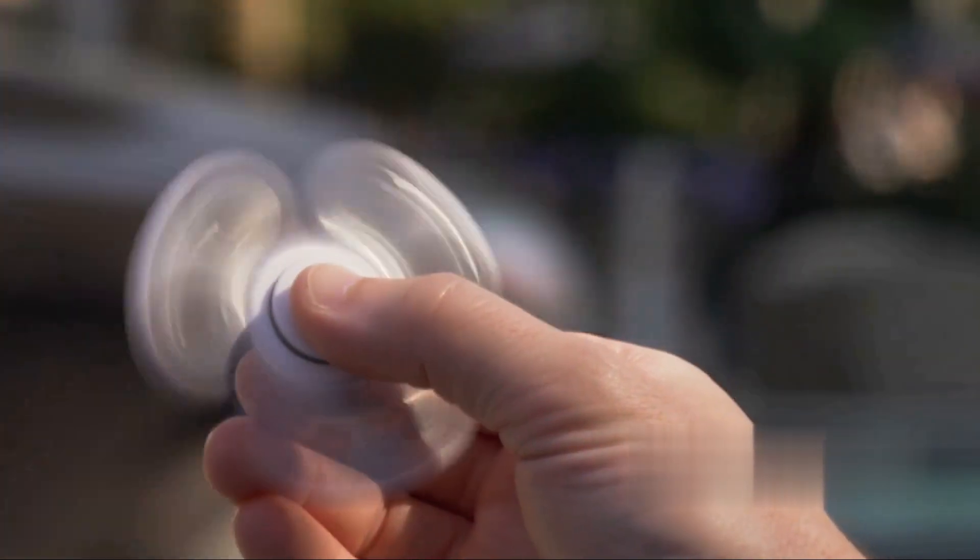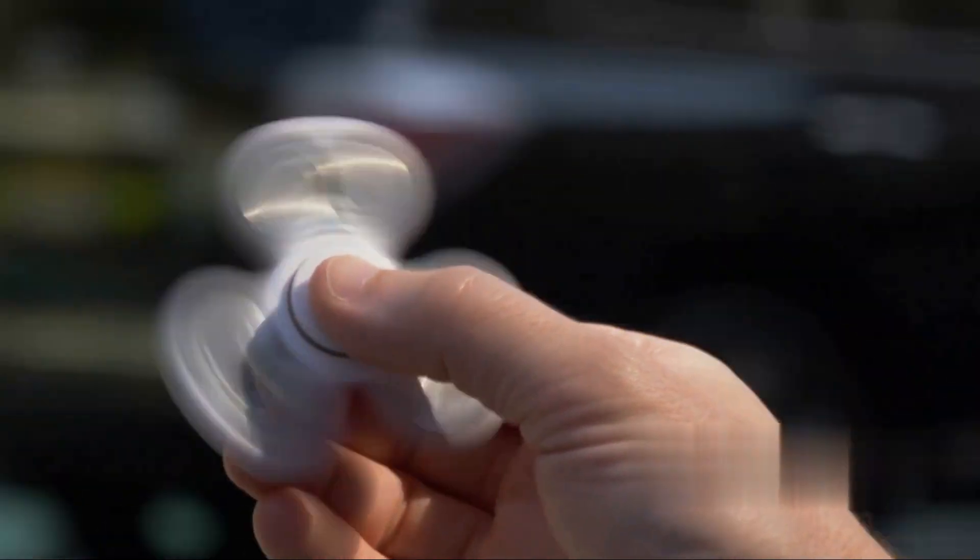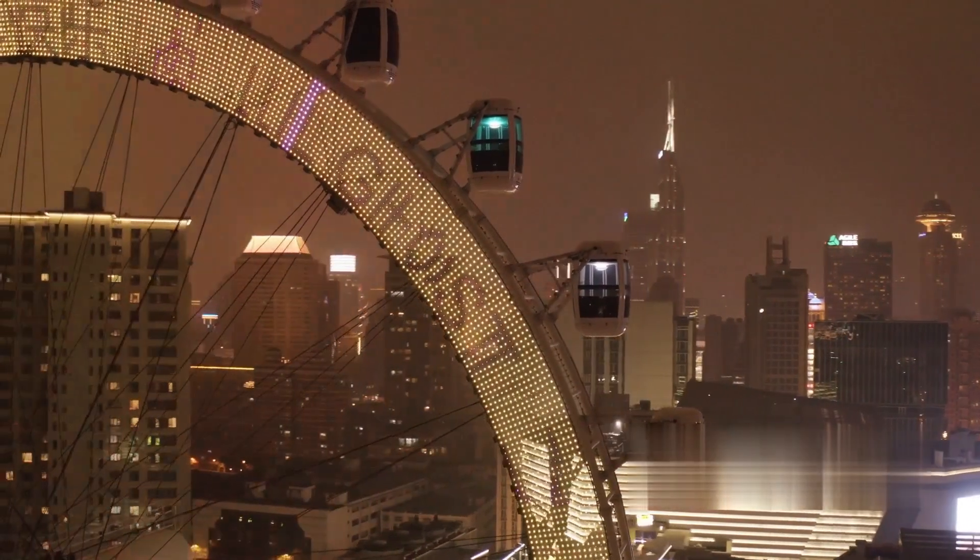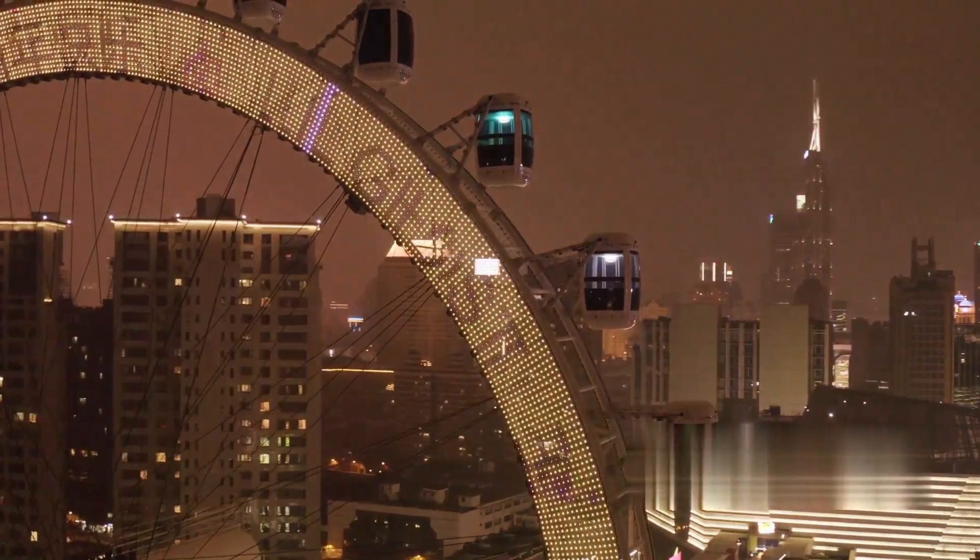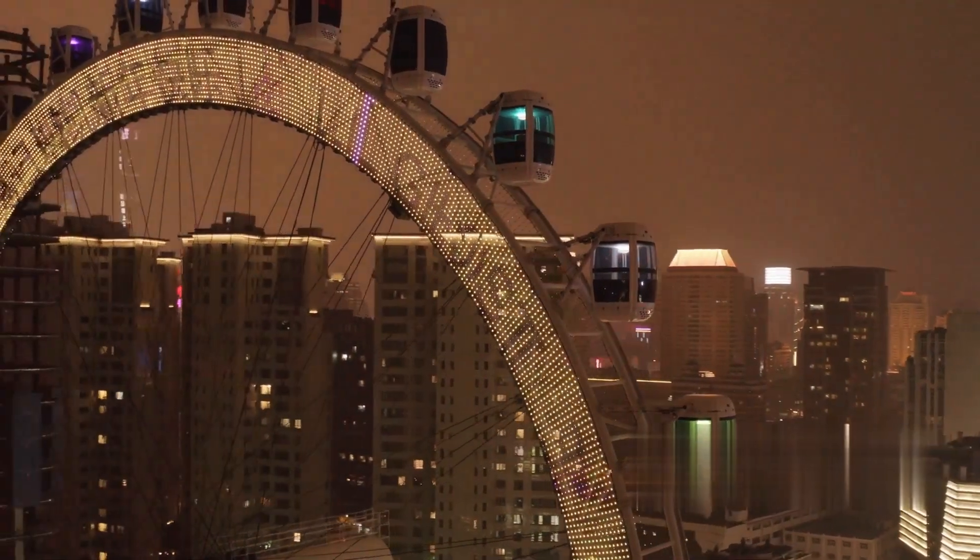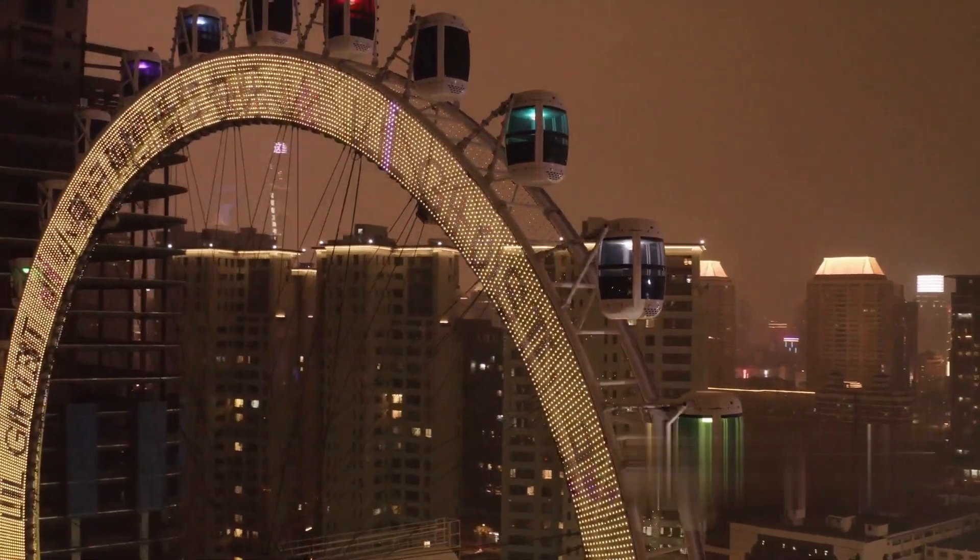At its core, a gyroscope is a spinning wheel or disc mounted on a set of pivots that enable it to rotate freely in multiple directions. Its behavior is governed by a key principle known as angular momentum, a measure of an object's tendency to continue rotating along its axis.